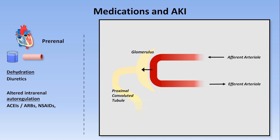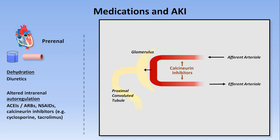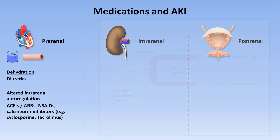The calcineurin inhibitors cyclosporine and tacrolimus are believed to directly vasoconstrict both the afferent and efferent arterioles through an unknown mechanism. Despite the fact that the effects of these drugs occur within the kidney itself, they are placed into the pre-renal category because the hemodynamic effect on the kidney's function is grossly similar to true causes of pre-renal AKI — though that is certainly a debatable categorization about which one should not be too dogmatic.